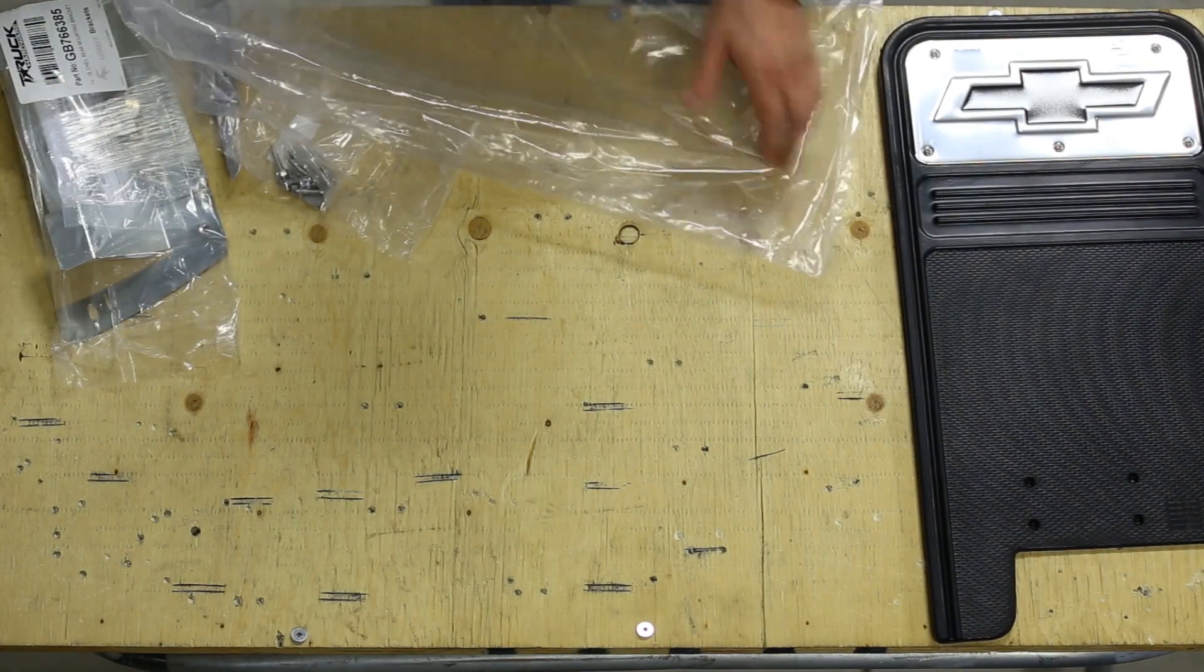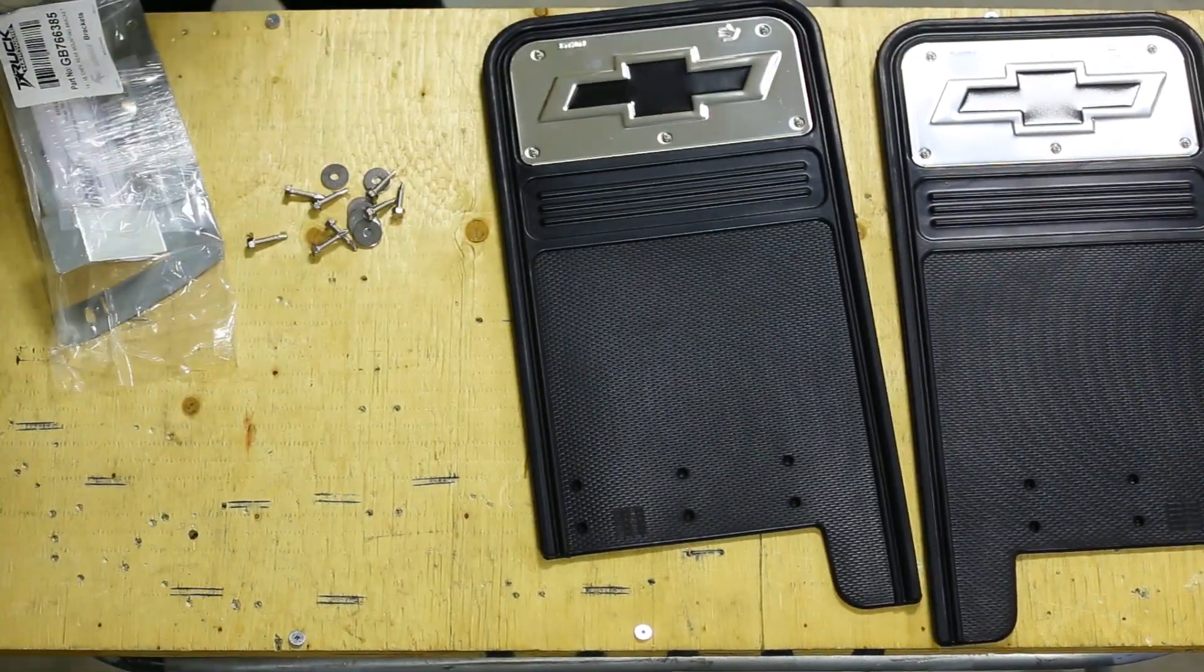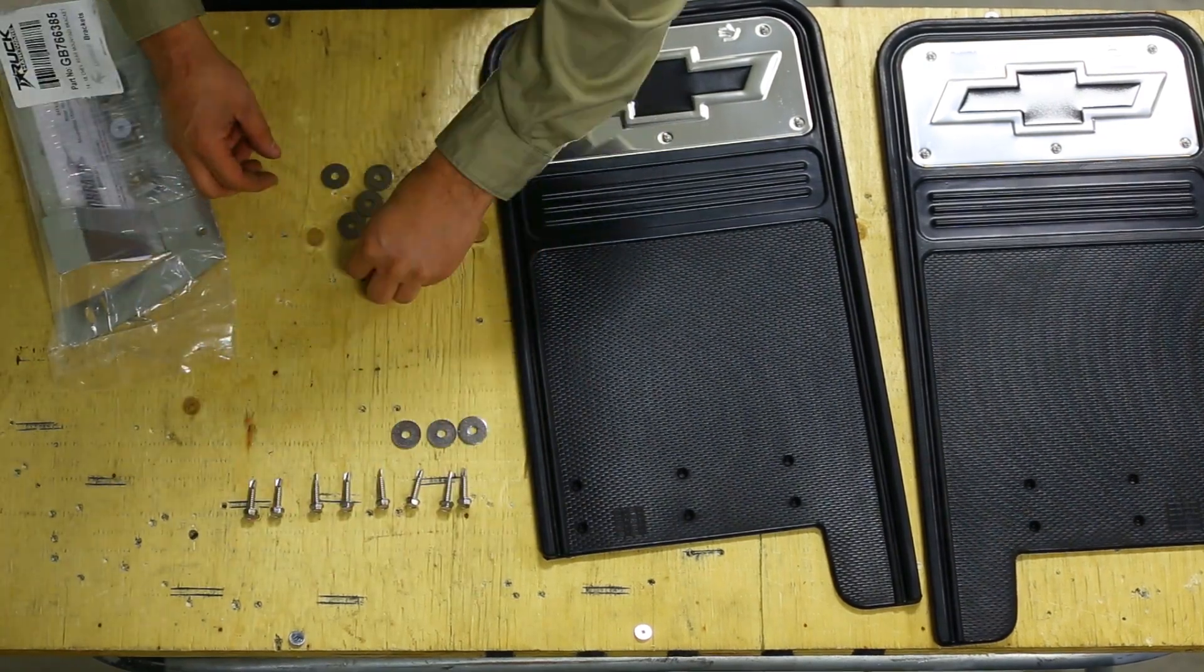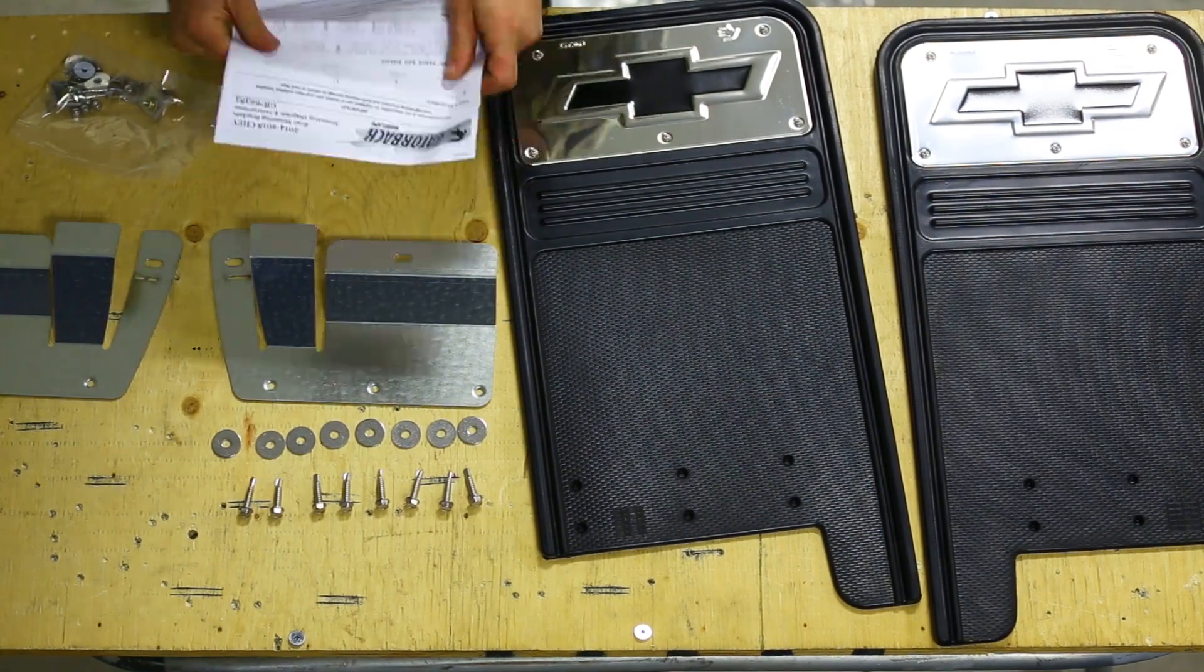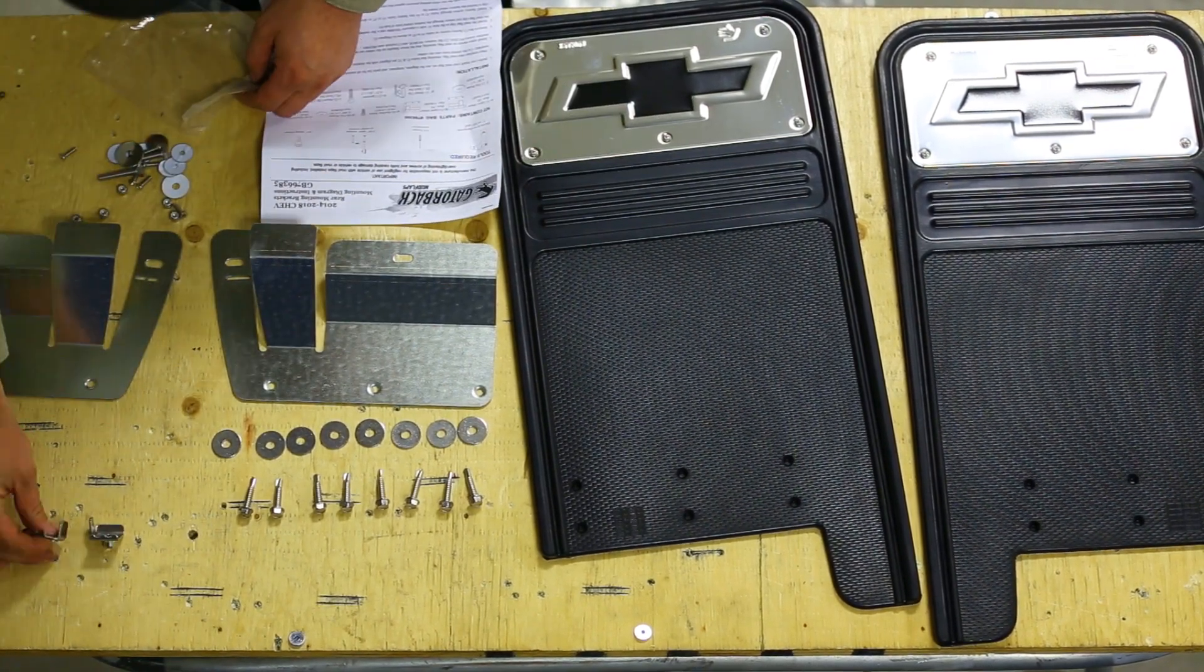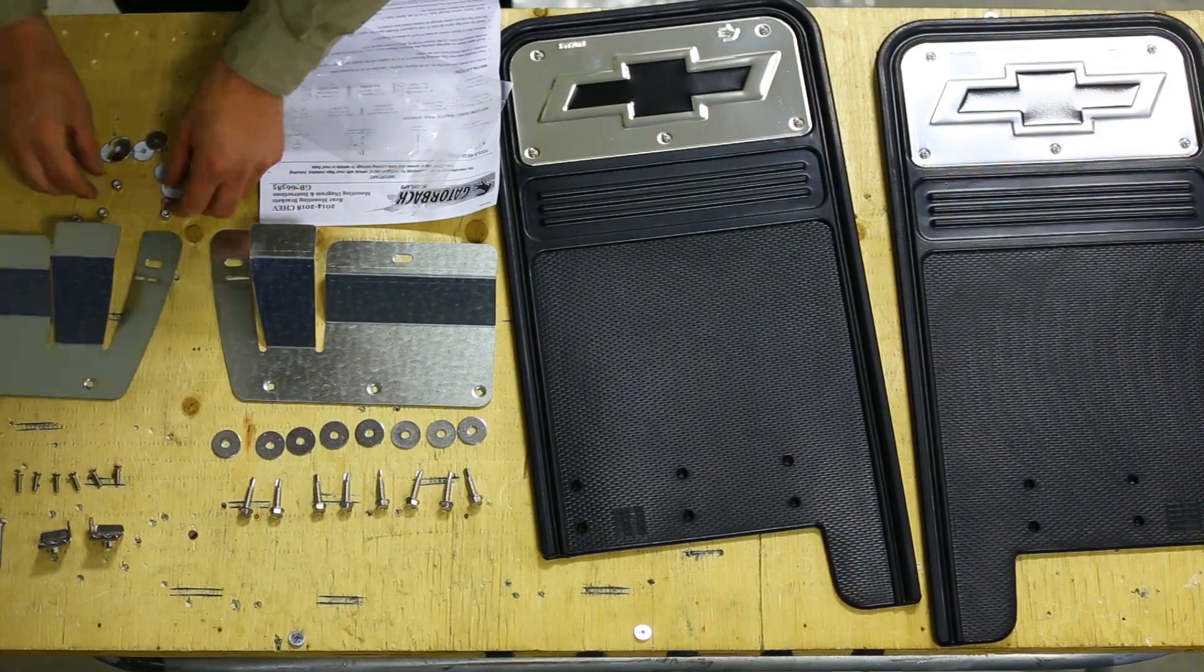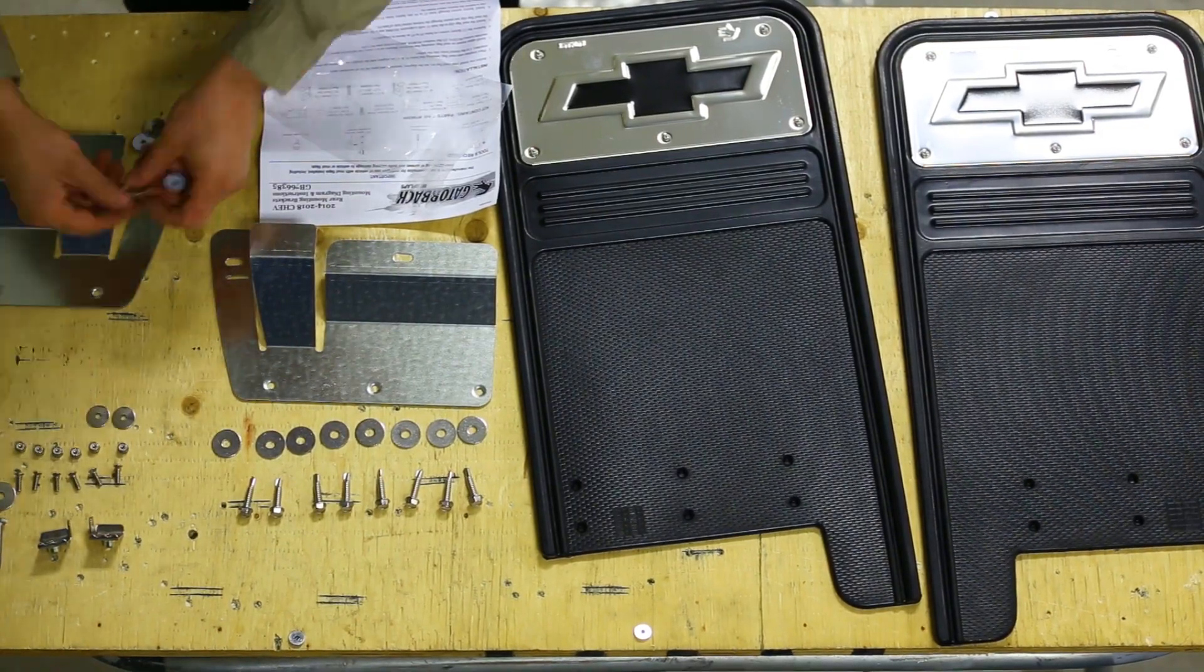To start, remove the bracketing and hardware from the package to verify the contents. Our support bracket is sold separately. The support bracket comes with a template and it makes the install a no-drill application. We recommend using the bracket to add extra support to your mud flap.